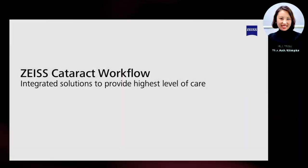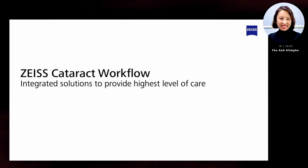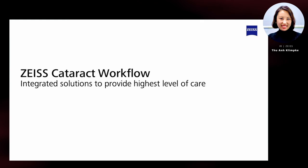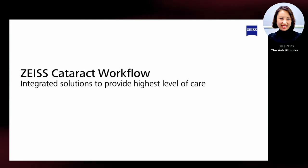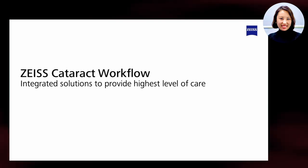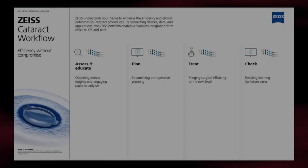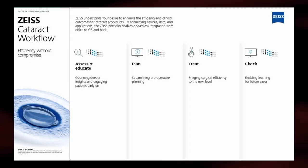In order to meet the needs of surgeons and patients, Zeiss has developed the cataract workflow. This workflow is focused on clinical processes and provides a connection between devices, data, and consumables. This portfolio enables a seamless integration from the office to the OR and back, supporting the doctor in generating high productivity and quality of outcomes. User data shows that time savings by using the Zeiss cataract workflow can be highly significant. The Zeiss cataract workflow includes four steps: from diagnostics to the planning process, the execution of the procedure itself, and up to the follow-up.